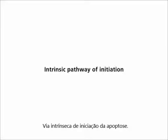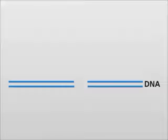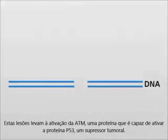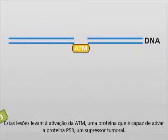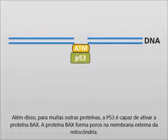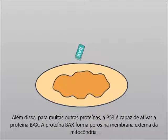Intrinsic pathway of initiation. The most frequent signals that activate intrinsic initiation are irreparable and irreversible DNA lesions. These lesions lead to the activation of ATM, a protein that is able to activate the tumor suppressor protein P53. In addition to many other proteins, P53 is able to activate the protein BAX.